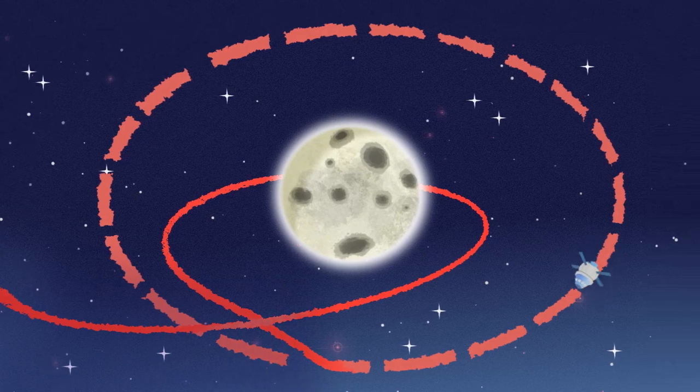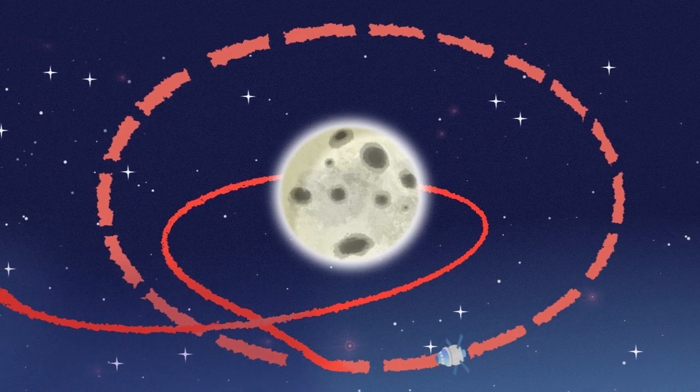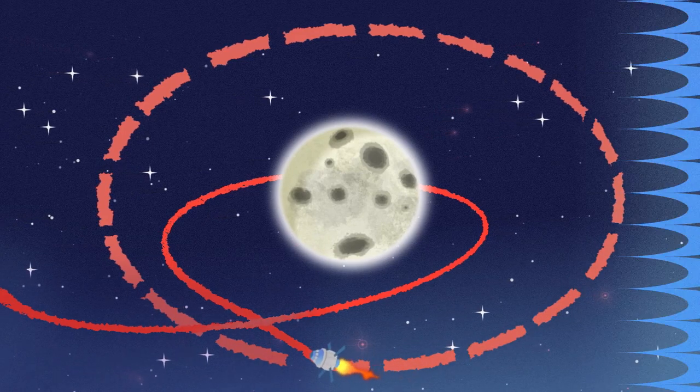Once it's time to come back to Earth, Orion's service module engines are fired to leave distant retrograde orbit, or DRO.